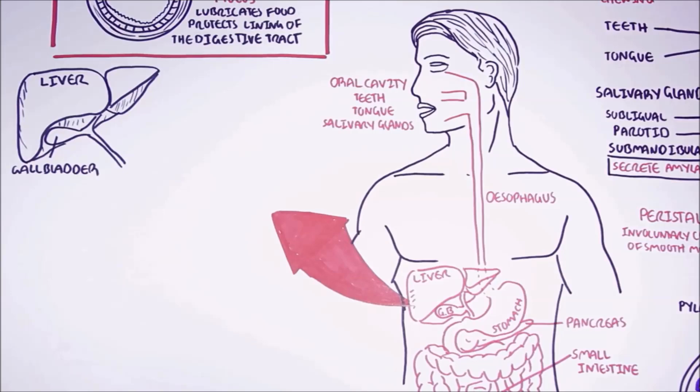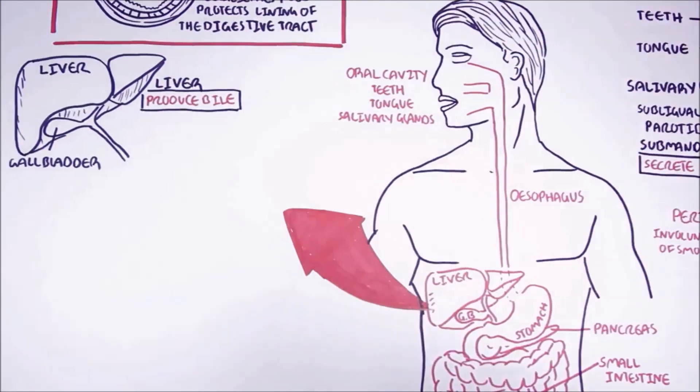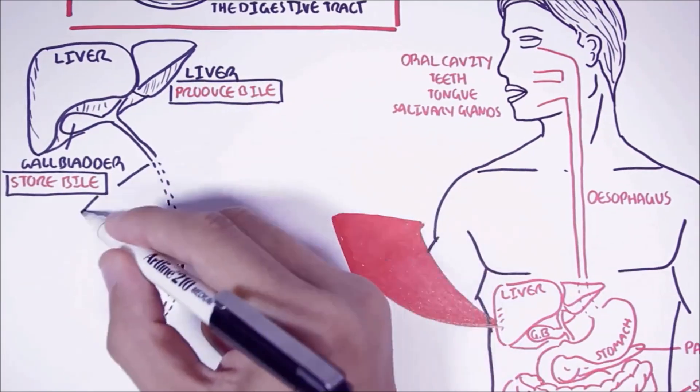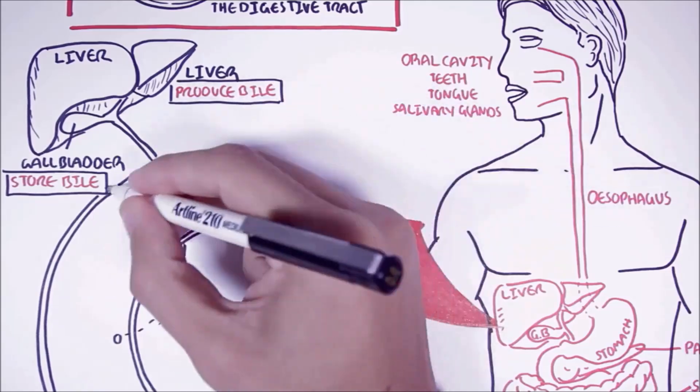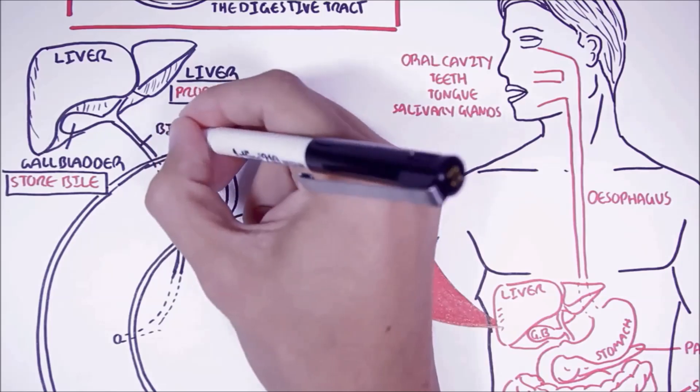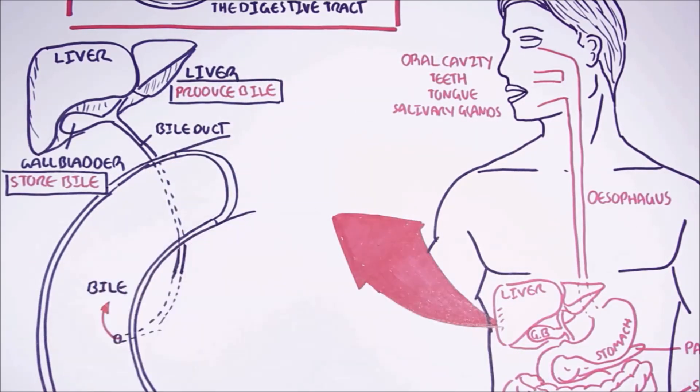The liver produces bile, which has a critical role in lipid digestion. The gallbladder stores the bile, and when needed, the gallbladder will contract and release the bile into the small intestine. Bile will enter the small intestine through the bile duct.